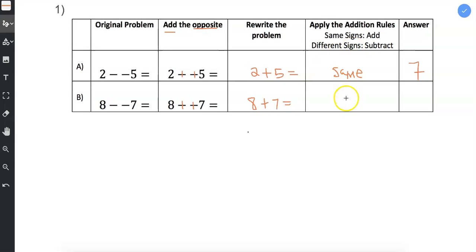And are the signs the same or different? The signs are the same. And 8 plus 7 is 15.